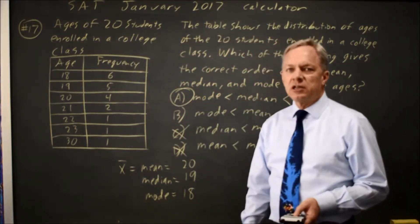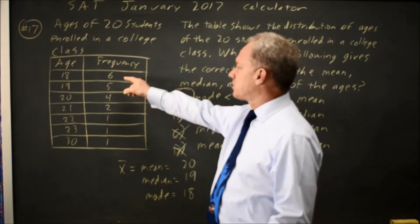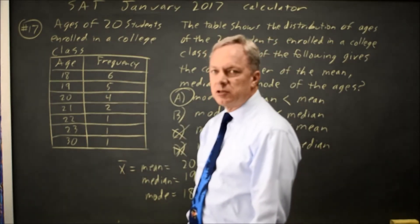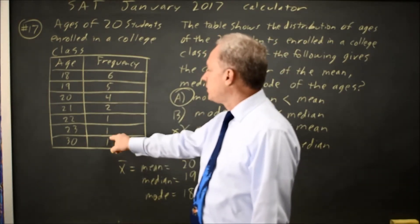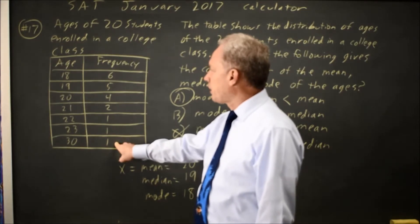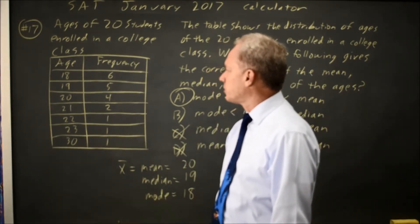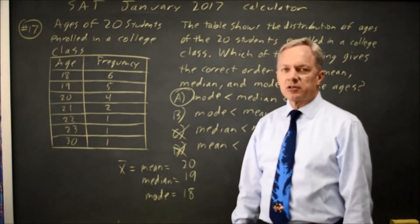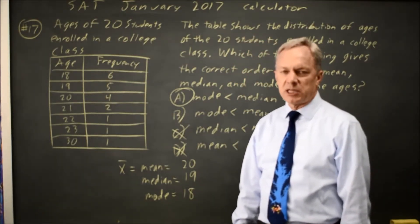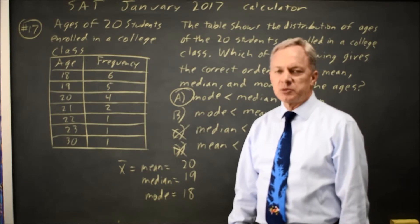Alternatively, I could look at the shape of this distribution. Since the distribution is skewed right or skewed high, because we have an outlier—the 30-year-old is much older than the other people in the class—that outlier will pull the mean higher than the median, as we know from general principles.